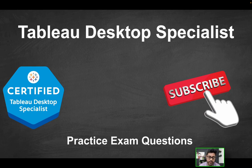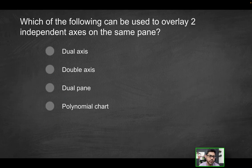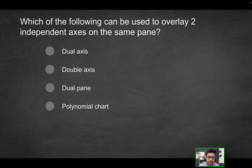Welcome to part 12 of the Tableau Desktop Specialist practice exam series. The first question is: which of the following can be used to overlay two independent axes on the same pane? Is it going to be dual axis, double axis, dual pane, or polynomial chart?